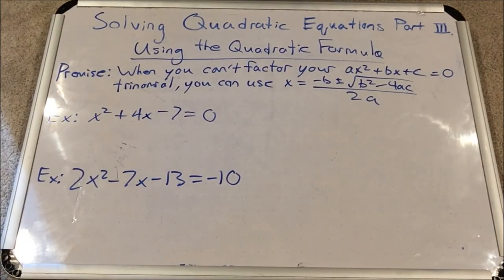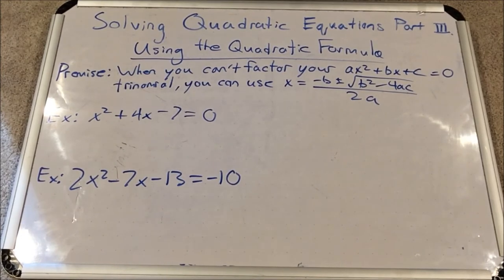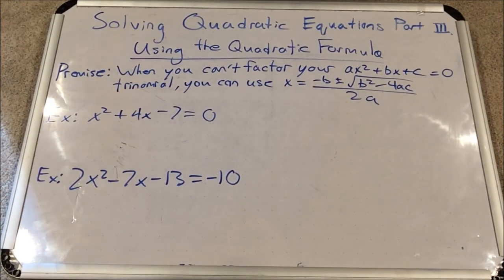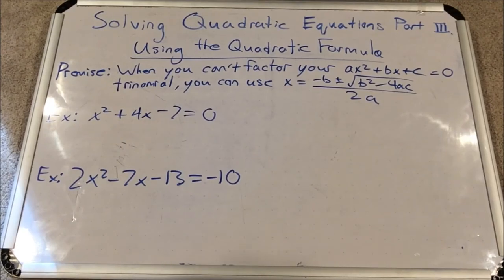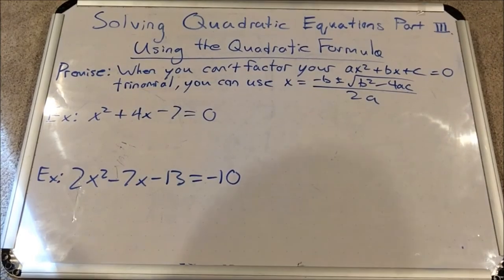And here's our last method: the infamous quadratic formula. This can be used no matter what — if you could factor it or if you can't — but it can be quite a pain to simplify the expression. Some people avoid it and use it as a last resort. However, completing the square does the exact same thing. Some people prefer the quadratic formula because they can memorize that expression more easily. I'm going to do this first example, which is the same as my first example from the completing the square method.